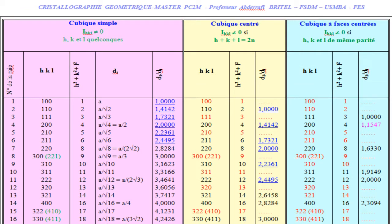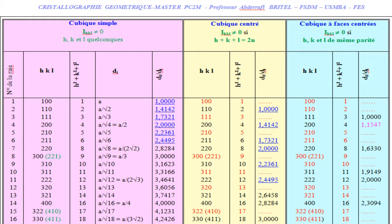Once the Bravais mode is determined, the indexation of the diffraction peaks or rays is done easily. For example, if the mode is primitive, the first ray is (1,0,0), the second (1,1,0), the third (1,1,1), and so on. If the mode is body-centered cubic, the first diffraction peak is (1,1,0), the third (2,1,1), and so on. If the mode is face-centered cubic, the first peak is (1,1,1), the second (2,0,0), the third (2,2,0), and so on.